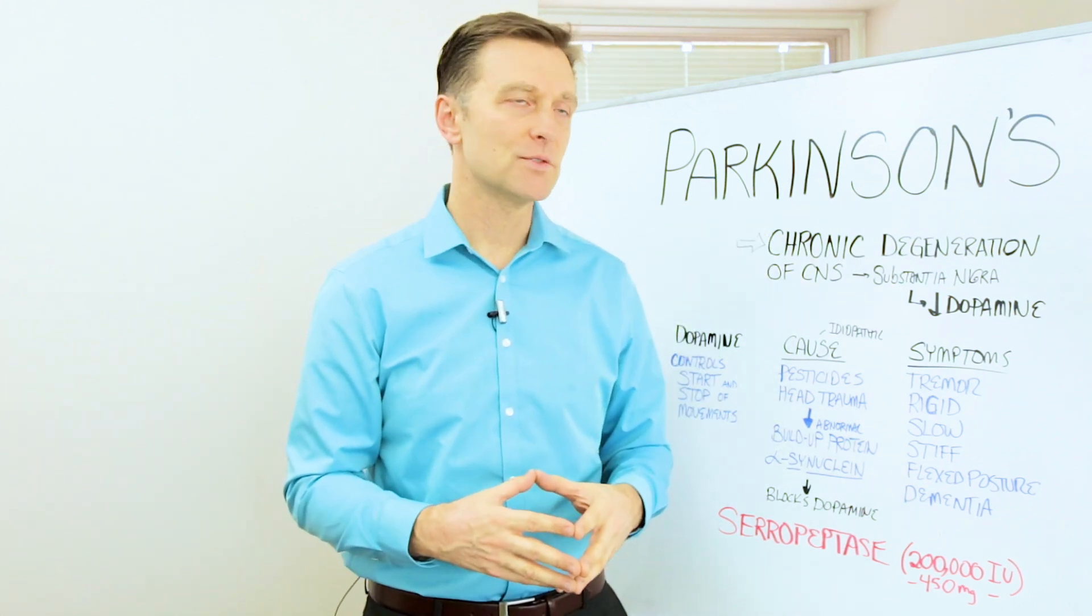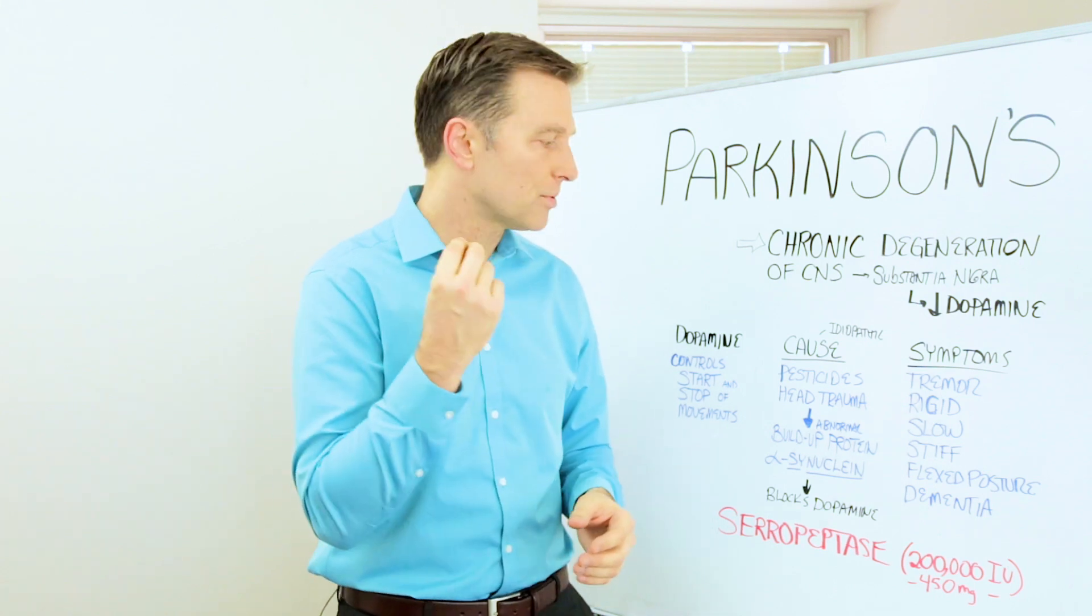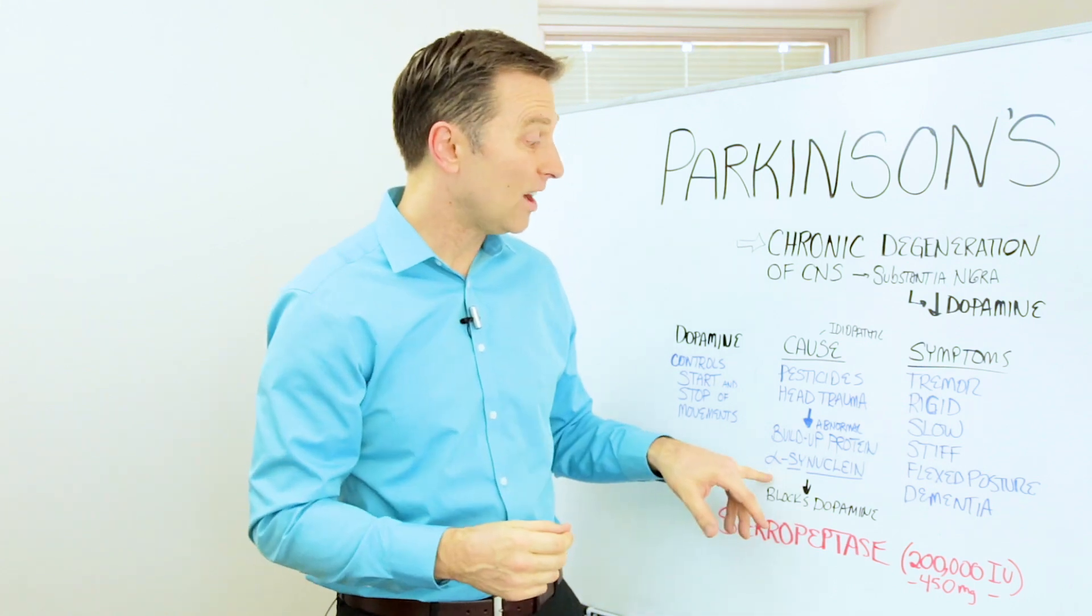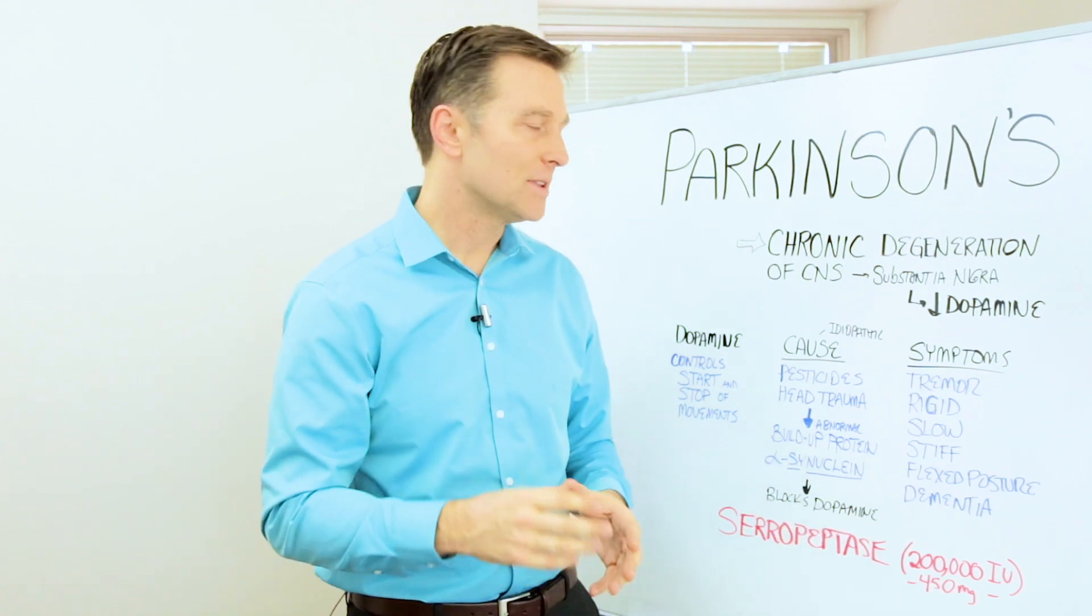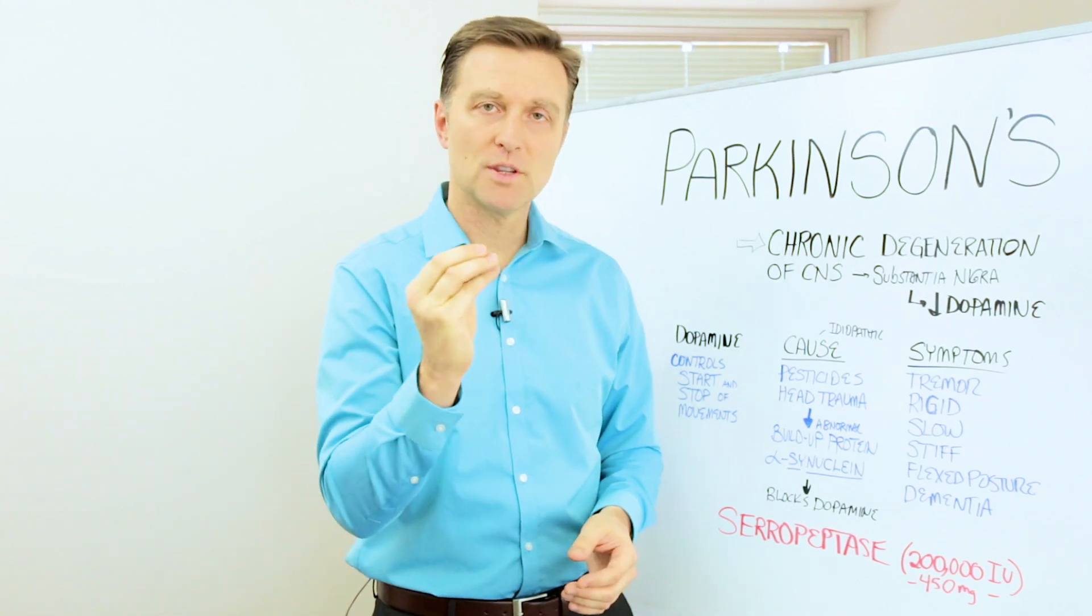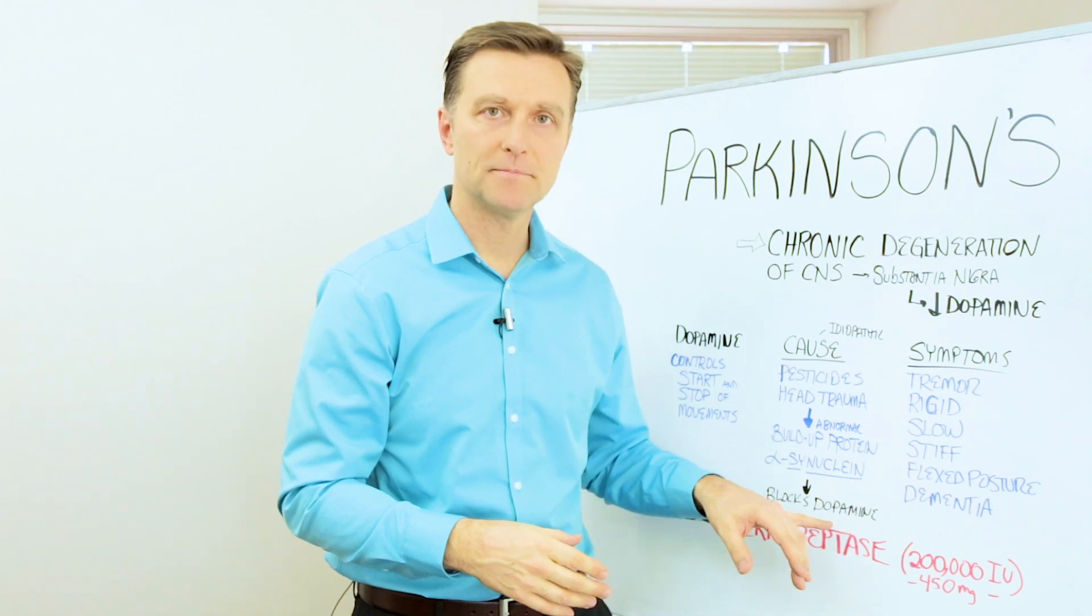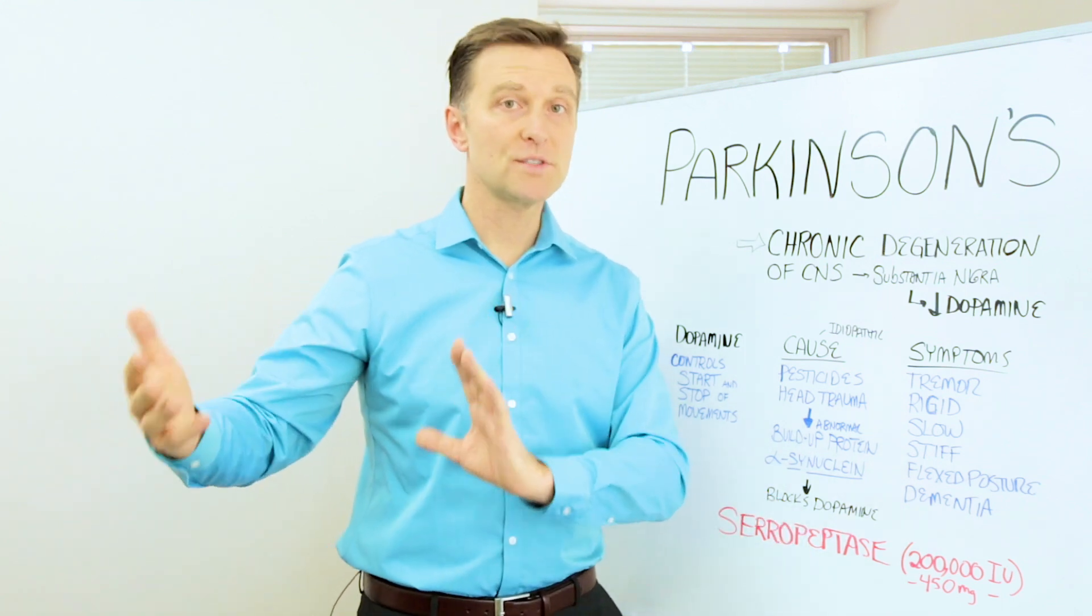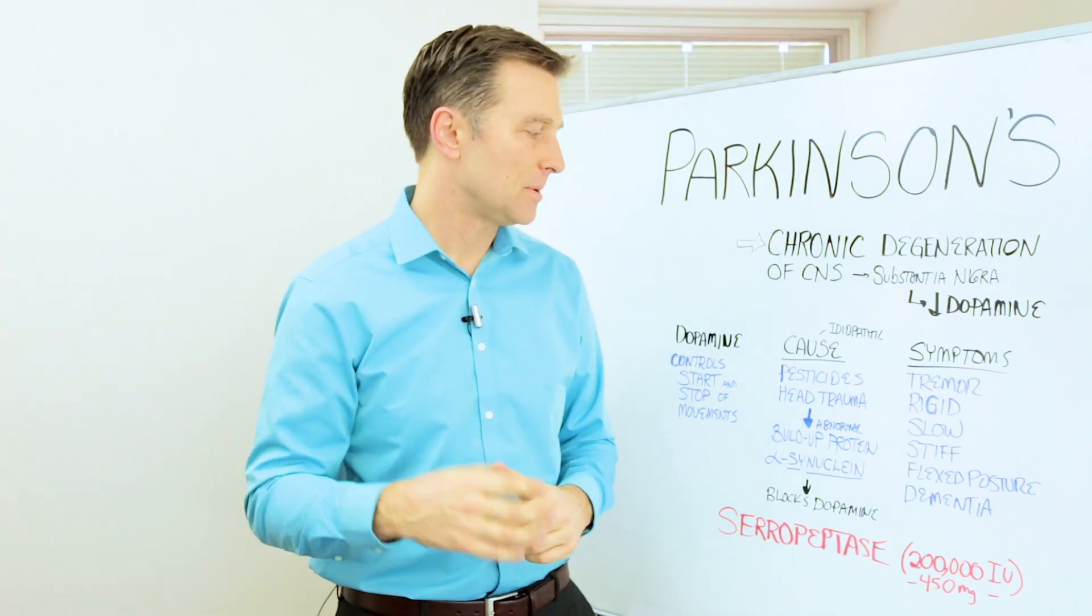There's some other interesting findings, and there's usually always this abnormal protein in the brain called alpha-synuclein. This abnormal protein accumulates in certain parts of the brain abnormally and interferes with dopamine. Very similar to Alzheimer's, you have amyloid plaquing. So it's another type of protein.